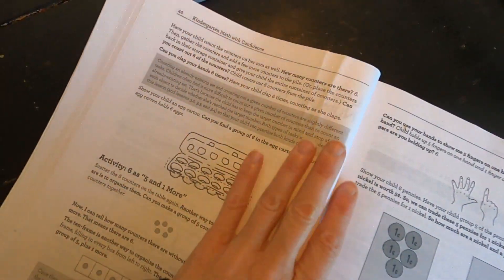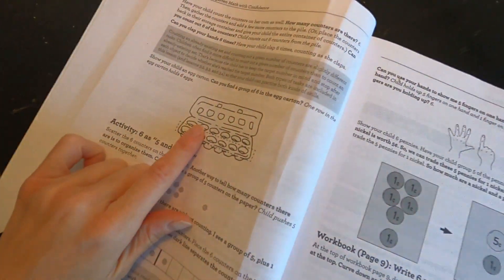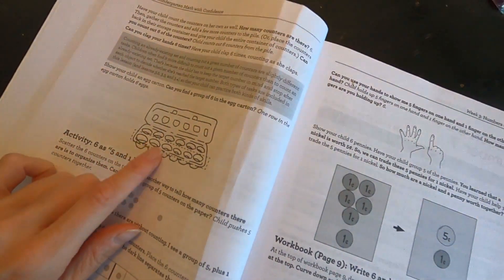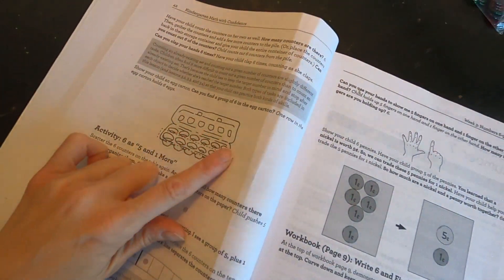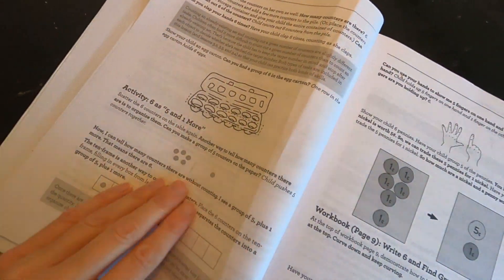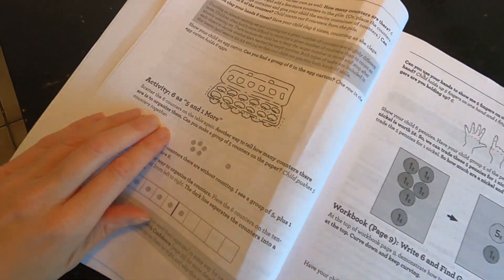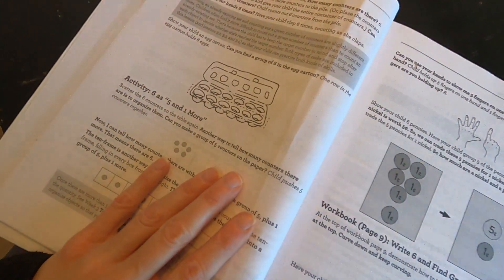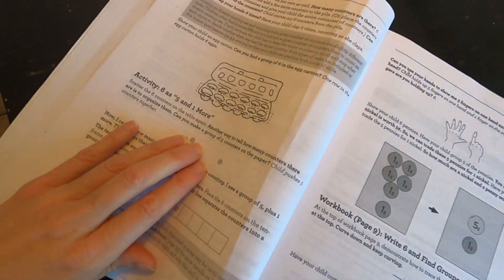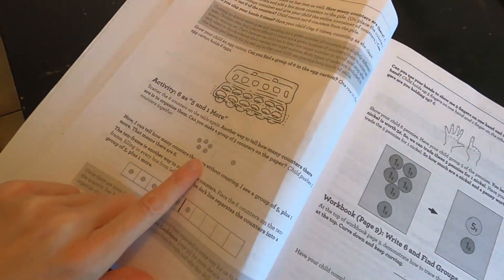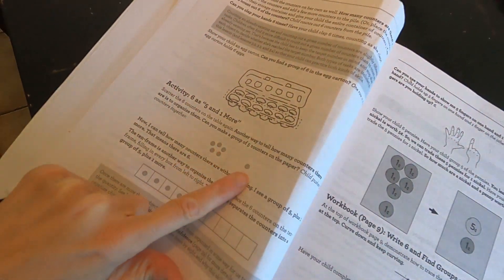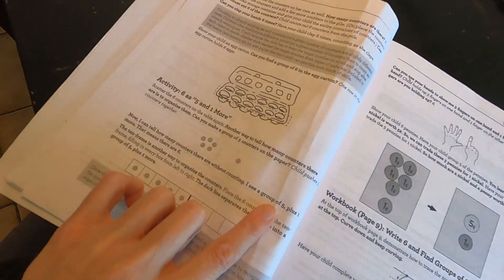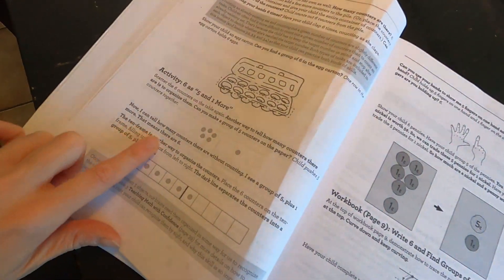Both types of tasks are included in this lesson and lessons 3.2, 3.3, and 3.4, so that your child can practice both types of skill. All right, now you're gonna need an egg carton. Show your child an egg carton - can you find a group of six in this carton? So one row holds six, right? The activity: six is five and more. Scatter six counters on the table. Another way to tell how many counters there are is to organize them. Can you make a group of five counters on the paper? So he pushes five together and then we got one left. All right, so that's what you're working on. That means there are six - I see a group of five, which is subitization, plus one more. That means there are six.